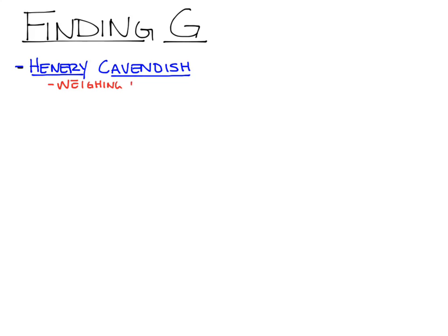He didn't actually weigh the earth — he just found the gravitational constant G. It turns out you cannot just put the earth on a scale and figure out how much it weighs. So the name of his experiment was 'weighing the earth,' but what he was doing was finding the gravitational constant. We'll look at how that could actually help us find the mass of the earth. It has a somewhat misleading name.